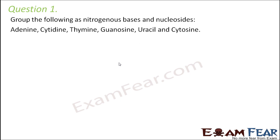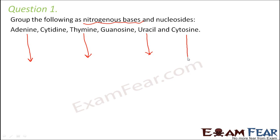Question number one: group the following as nitrogenous bases and nucleosides. There are just four nitrogenous bases: adenine, thymine, guanine, and cytosine. In case of RNA there is uracil. So uracil is a nitrogenous base, thymine is a nitrogenous base, adenine is a nitrogenous base, and cytosine is again a nitrogenous base.